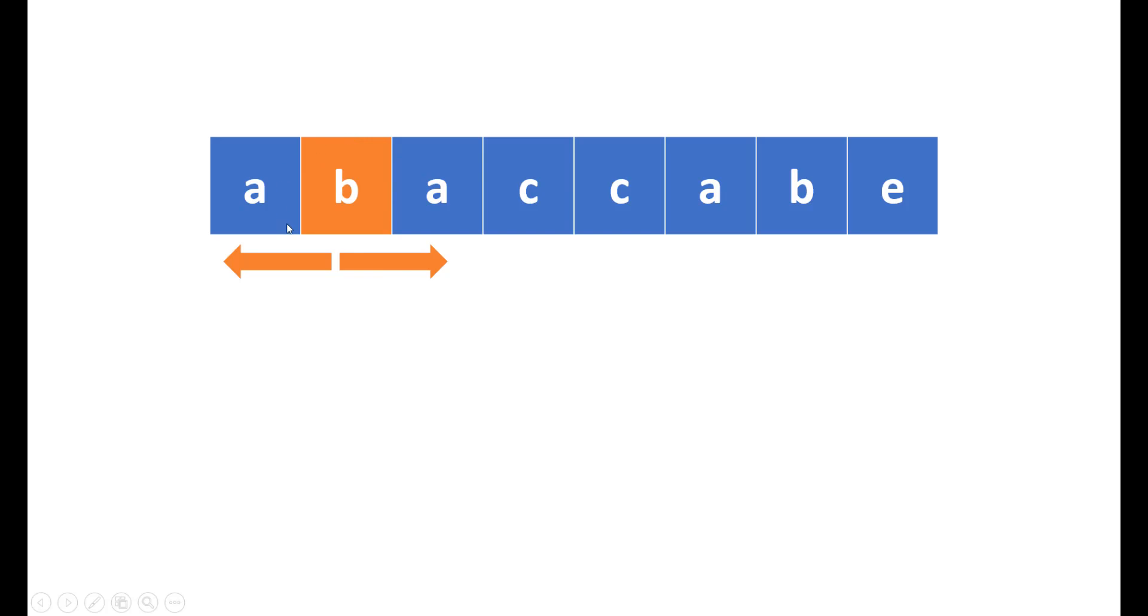Now, this case is only possible when you have an odd length palindrome. In that case, you will have a center as a single character. For this particular example with the center B, we can get the palindrome as ABA because after that it makes a string non-palindrome.